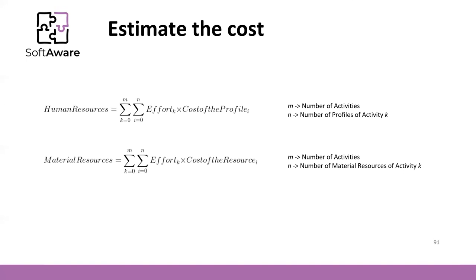Regarding the material resources, we apply the same idea. For each work package we identify the costs of each resource needed to perform that work package, then we multiply the cost of the resource by the effort and sum for all work packages to get the material resource cost. Of course, if you need a computer or cloud computing for the whole project, you calculate it across the entire project rather than per work package.